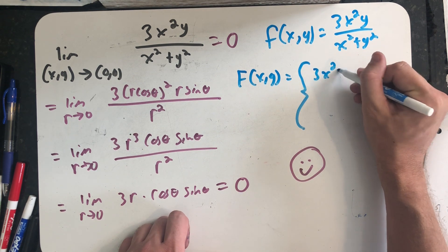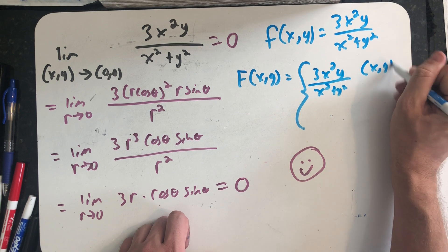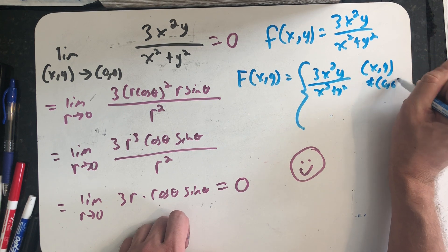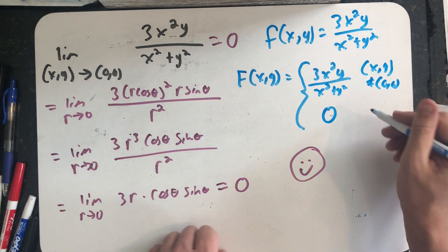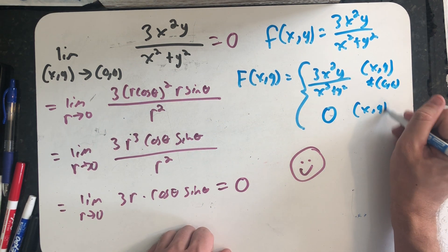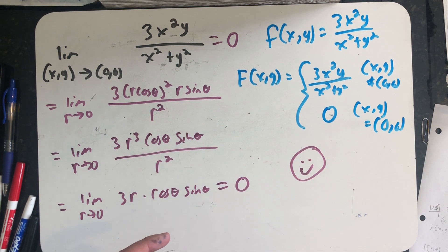where for all the points that aren't the origin, I'm going to leave the formula alone. So when (x, y) is not the origin, and when (x, y) is the origin, I want to get out the value zero. And now my function has been extended to be continuous over the whole real plane.